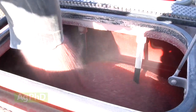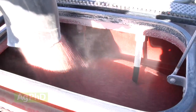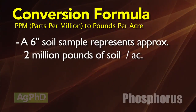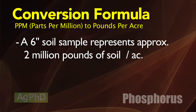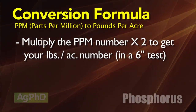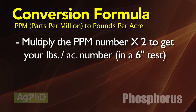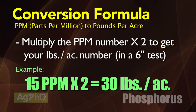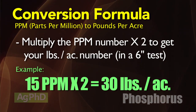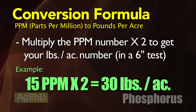You've got to relate parts per million to the pounds per acre you need for your crop. If you have a soil sample that is 6 inches deep, that is representing 2 million pounds in your field — if you were to weigh out an acre 6 inches deep, it would weigh approximately 2 million pounds. So to convert parts per million to pounds per acre, all you need to do in that 6-inch test is multiply by 2. If your number came up as 15 parts per million, multiply times 2 — you have 30 pounds per acre.